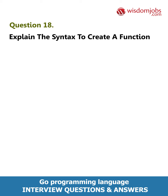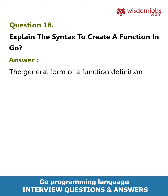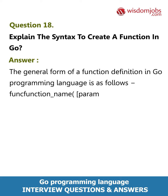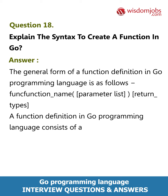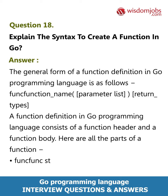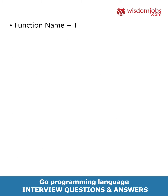Question 18: Explain the syntax to create a function in Go. Answer: The general form of a function definition in Go programming language is as follows. A function definition in Go consists of a function header and a function body. Here are all the parts of a function.